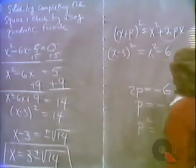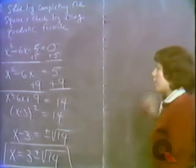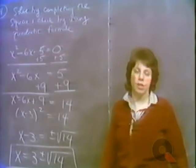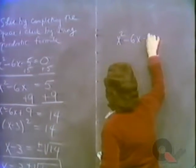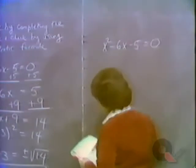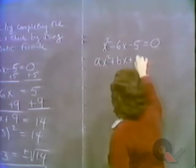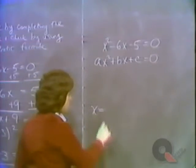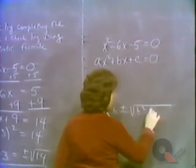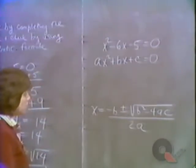Now let's also check this example by using the quadratic formula. We solve x squared minus 6x minus 5 equals zero. We leave the problem in standard form and match it to ax squared plus bx plus c equals zero. The quadratic formula gives x equals minus b plus or minus the square root of b squared minus 4ac, all over 2a.